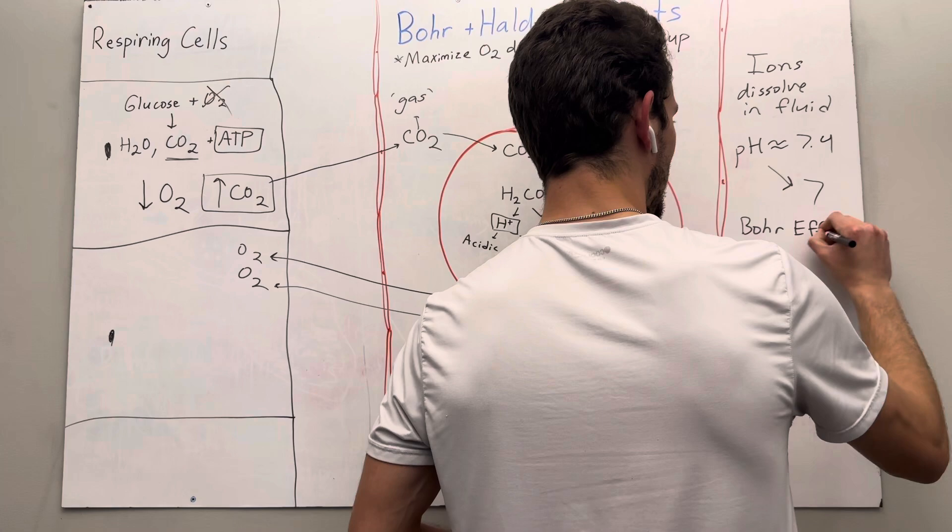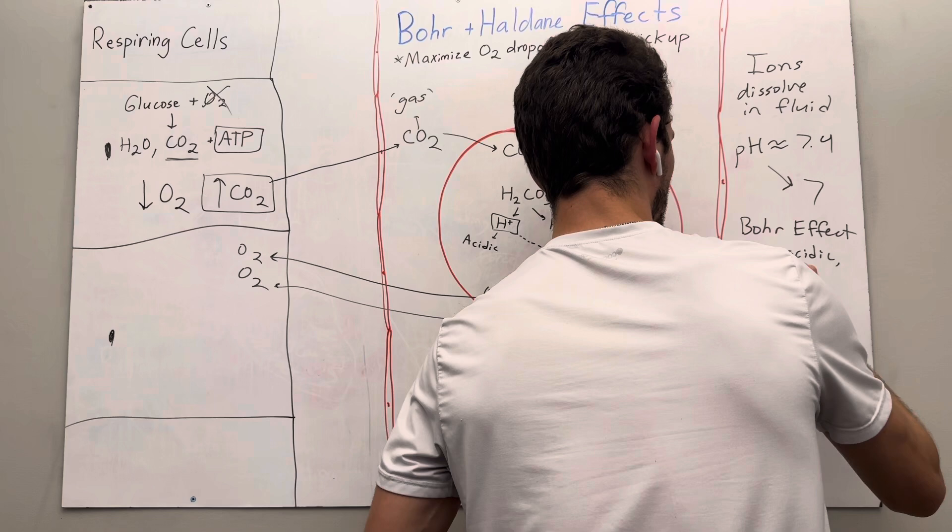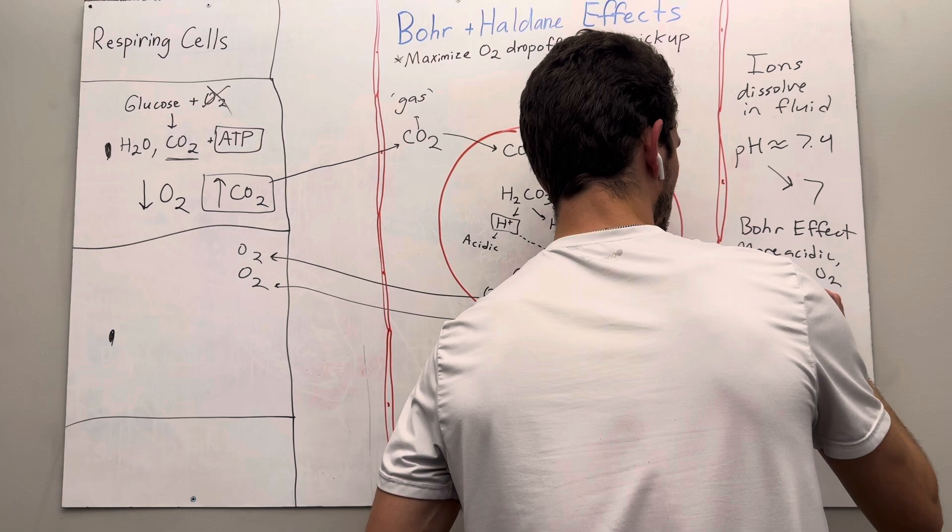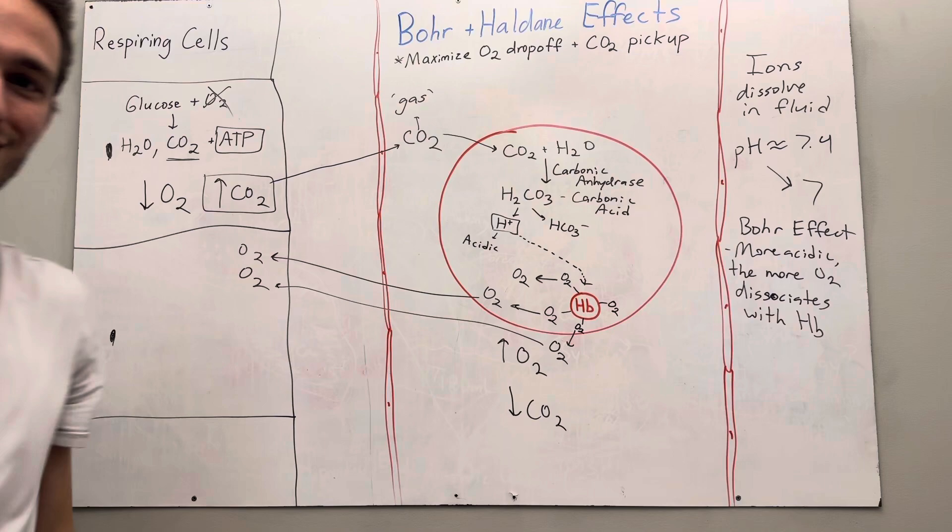So this is the Bohr effect. The Bohr effect states that the more acidic the solution, the more oxygen will disassociate with the hemoglobin protein. So the more acidic, the more O2 disassociates with hemoglobin. And hemoglobin, I just shorten up as Hb. So that's the hemoglobin protein. Since the hydrogen kicked off the oxygen, now the oxygen free flows into the tissue cells. So now we fed our cells oxygen. That's wonderful.